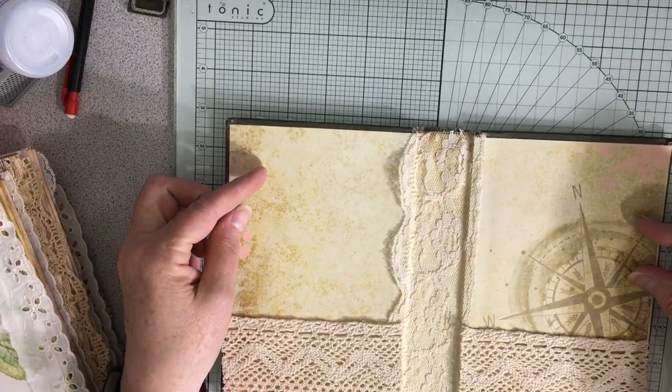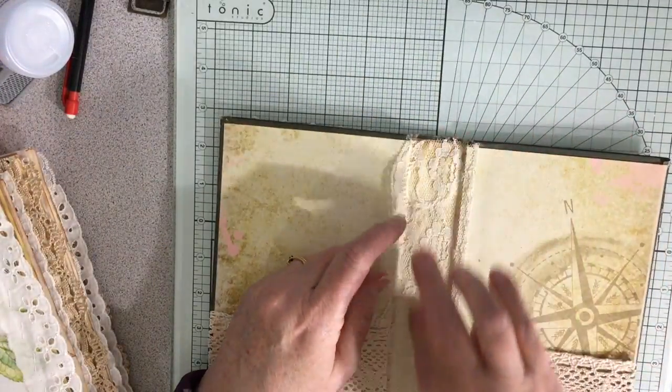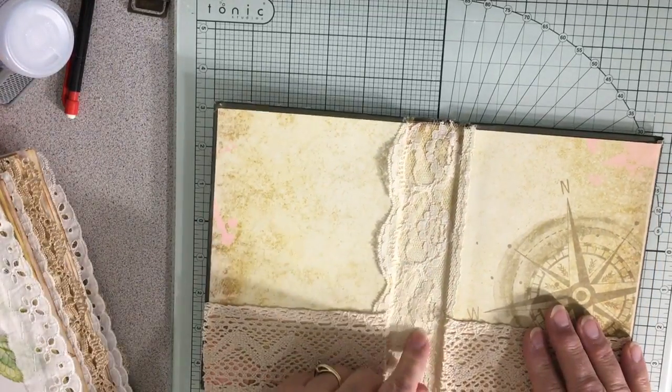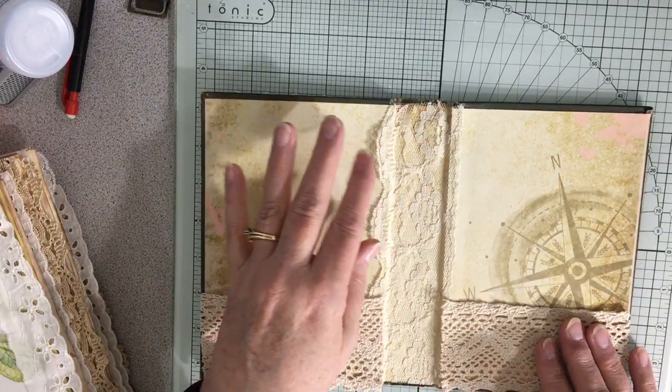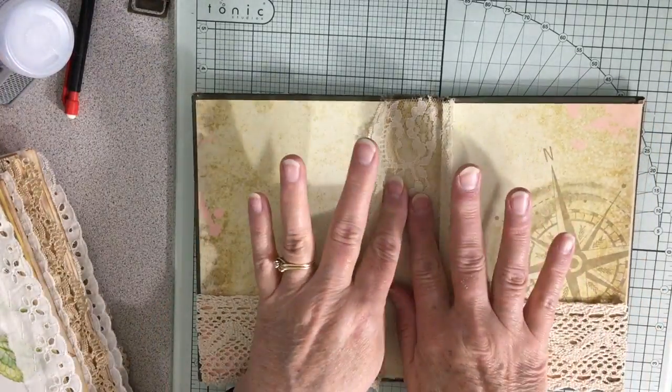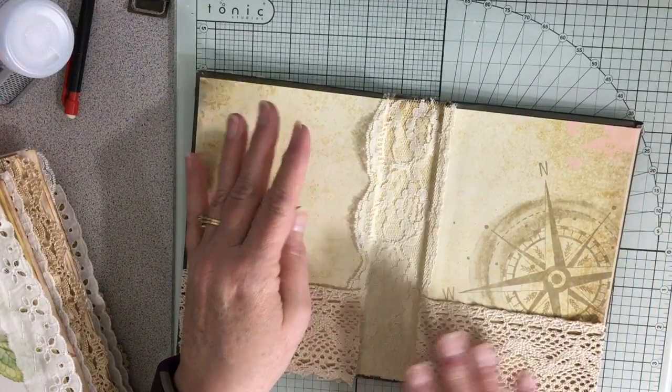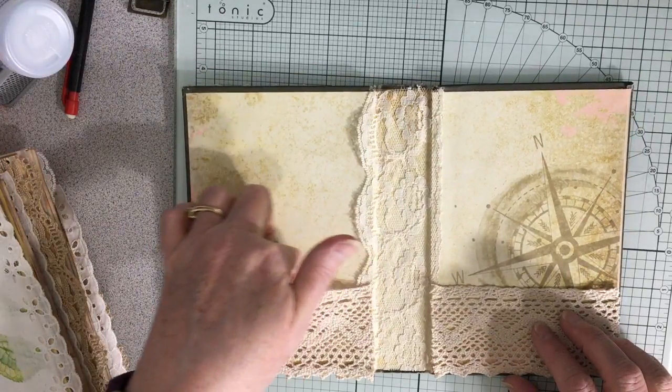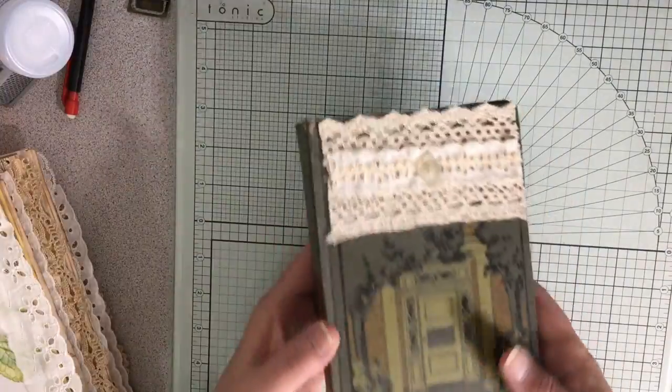Inside I put some Bo Bunny paper. In the middle I reinforced it with some heavier cardstock, and then put down some of this paper, put these over it, and then I put this piece of lace over it to keep it pretty. And then these two pieces of lace I glued in for pockets. So that's the cover.